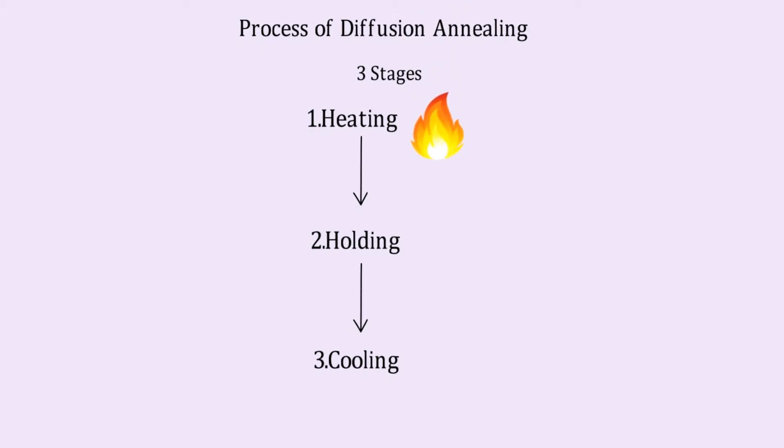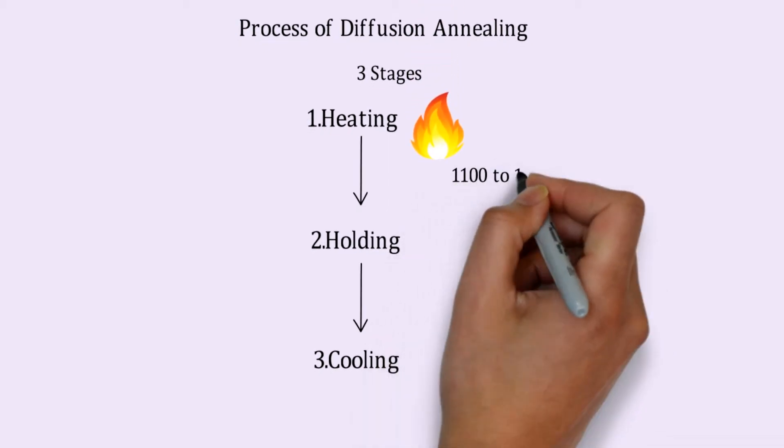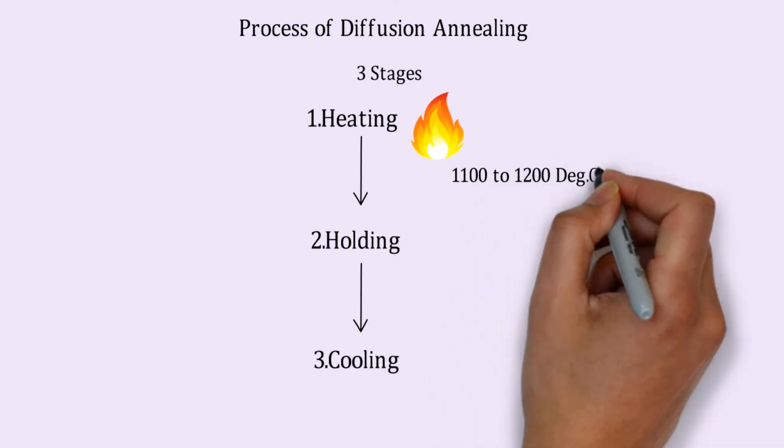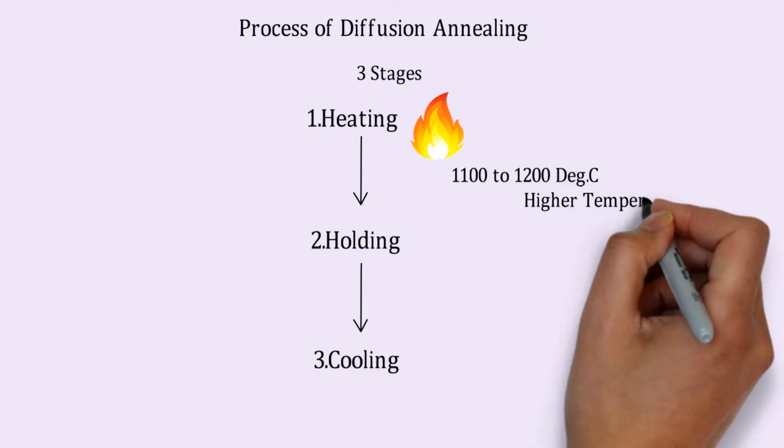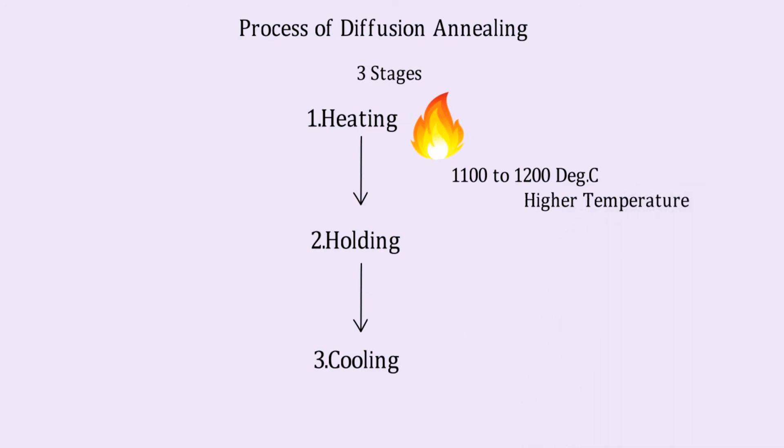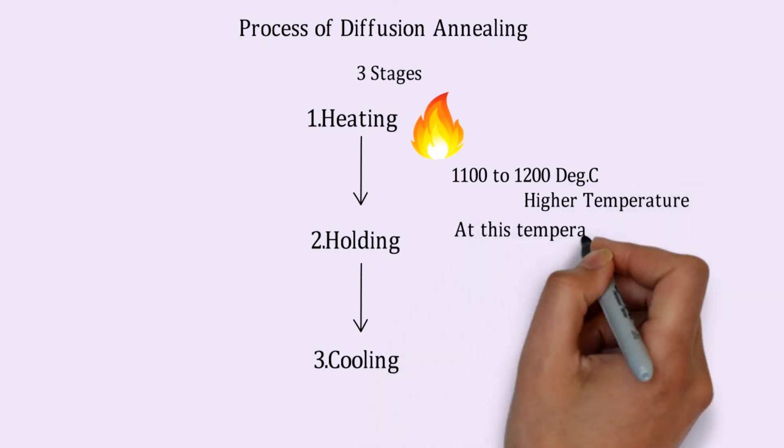The first stage is heating. In this process, the steels are heated up to 1100 to 1200 degree Celsius, which is at the highest temperature in heat treatment. At this temperature, the composition becomes homogeneous and the grain structure becomes equalized.